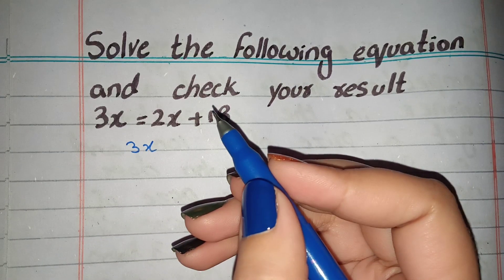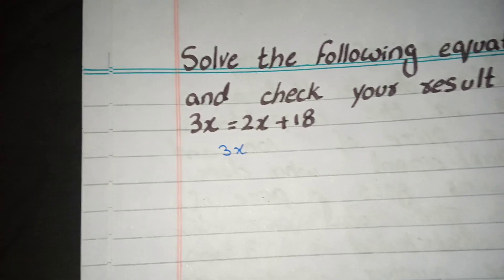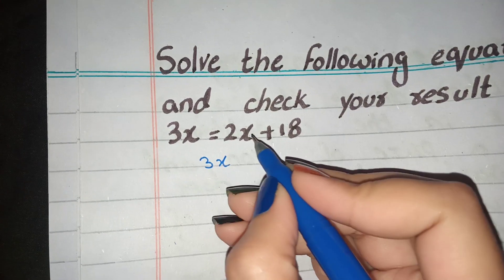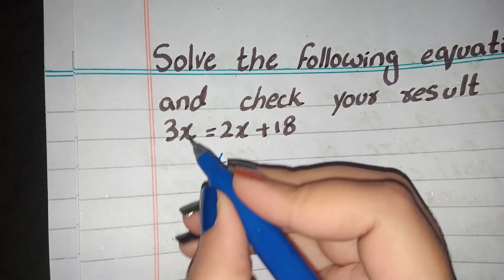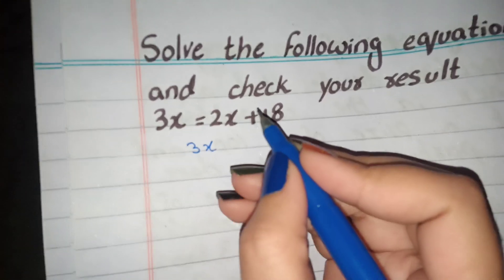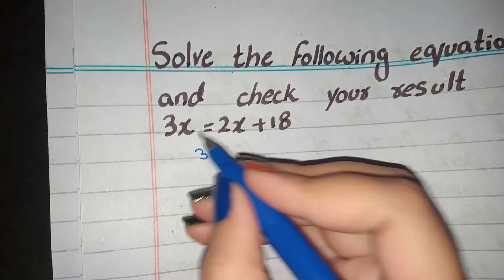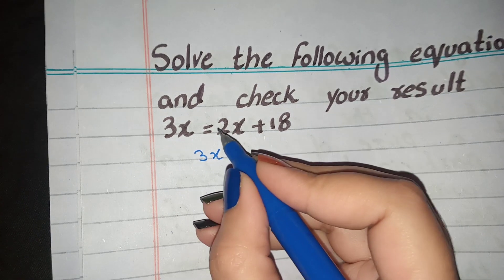Our equation is 3x equals 2x plus 18. We will take 3x and we will put 2x here. We will put 2x on the left side. This is plus here.